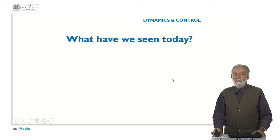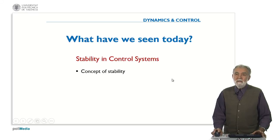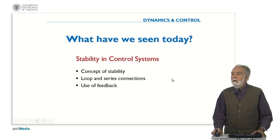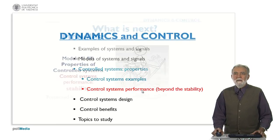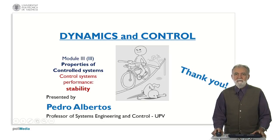Well, what have we seen today. We have seen the stability in control systems. The concept of stability. The connection of subsystems in loop or in series. The use of feedback to modify the stability conditions. And the design of stabilizing control. In the next module we will go beyond stability, looking for some other control system performance. Like I mentioned before, robustness, accuracy, and so on. And that is all for today. Thank you.